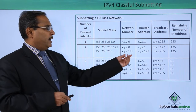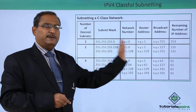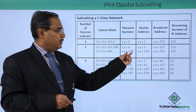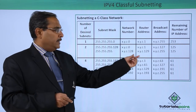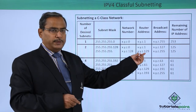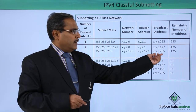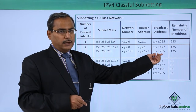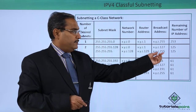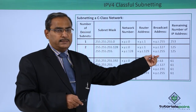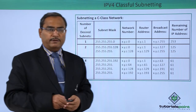For subnet 1, the last byte's first bit is 1, so it starts at 128. The next address is the network/router address and the last highest address is the respective broadcast address. So there are 125 host IDs remaining for this subnet as well.